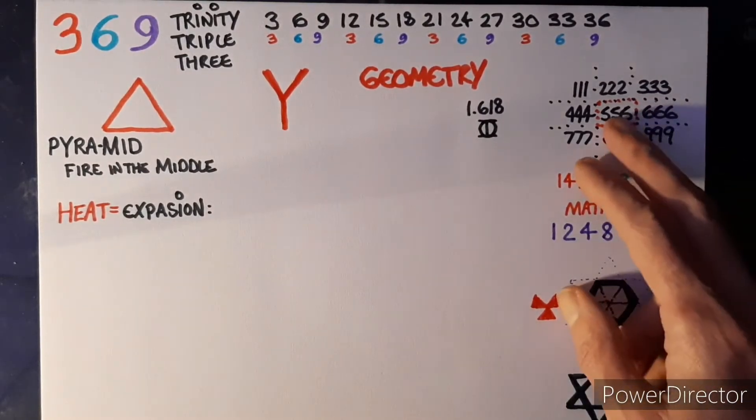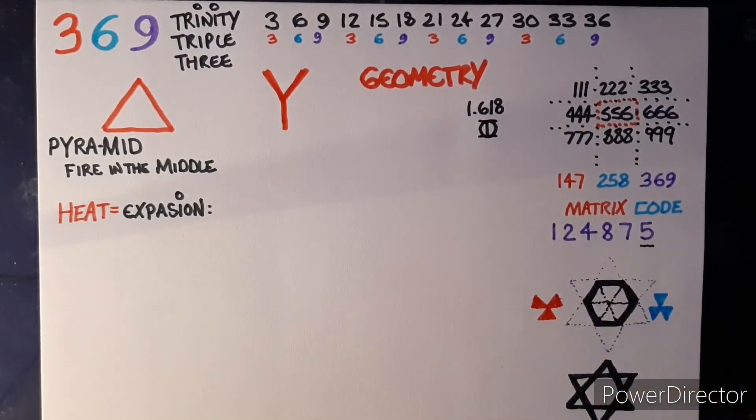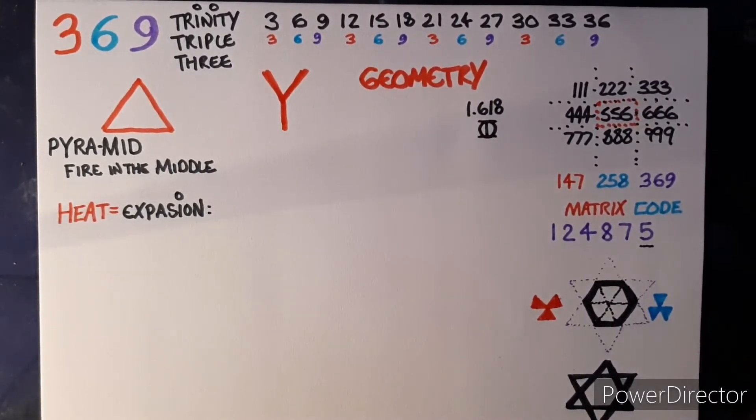The triple number system invites you to look at the triple five at the center. Three fives is 15, one plus five is six, so six will be at the center.